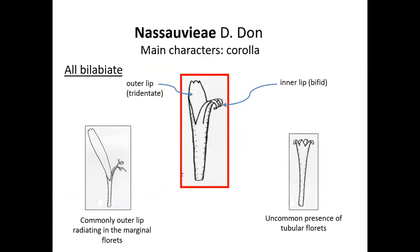Regarding the diagnostic characters of Nassauvieae, one of the main diagnostic characters is the corolla. In the Nassauvieae, with very few exceptions, all the florets of the capitula are bilabiate. A typical bilabiate corolla is constituted by an inner bifid lip and an outer tridentate lip. It is very usual that this outer lip is extended and long, until it is radiating in the marginal florets. Very few genera in the tribe also have tubular florets.